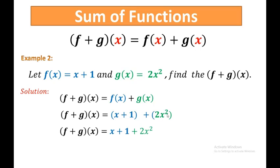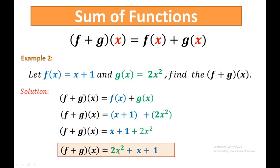We cannot combine 2x² and x because they have different exponents. So we arrange from highest degree: (f + g)(x) = 2x² + x + 1. The sum of f(x) = x + 1 and g(x) = 2x² results in the function 2x² + x + 1.